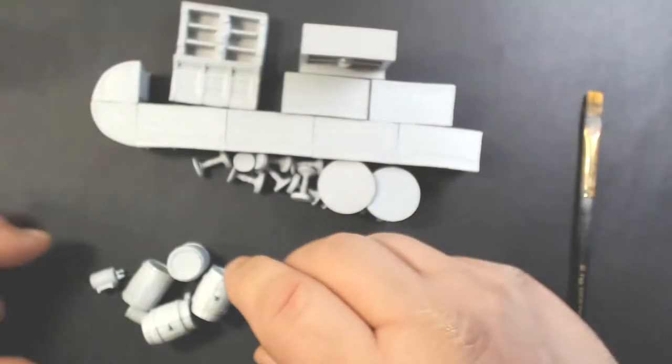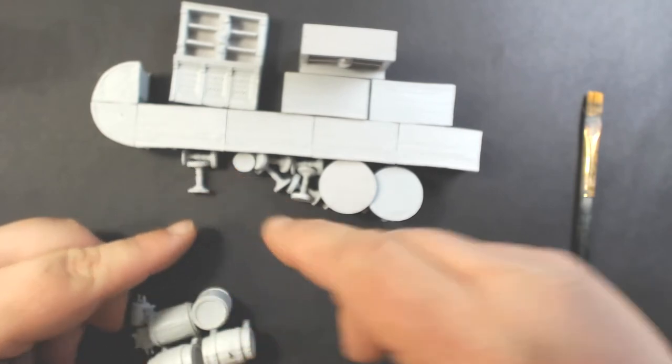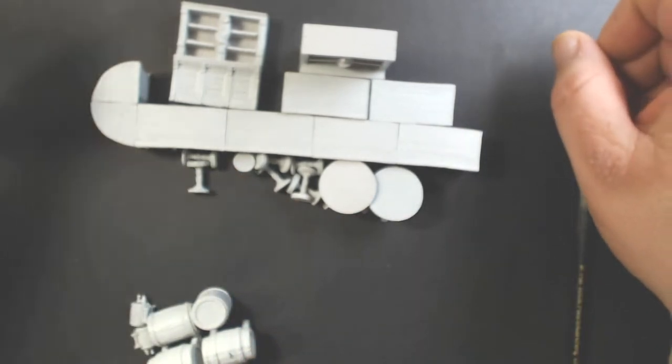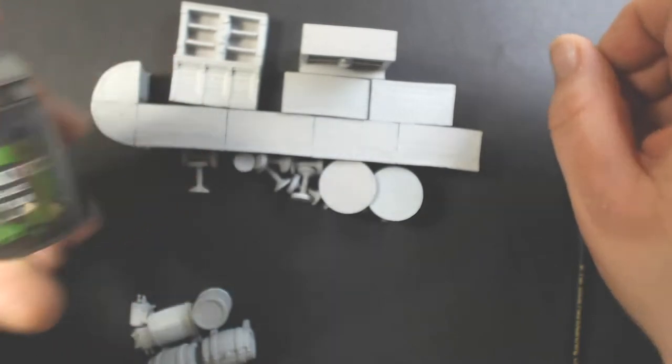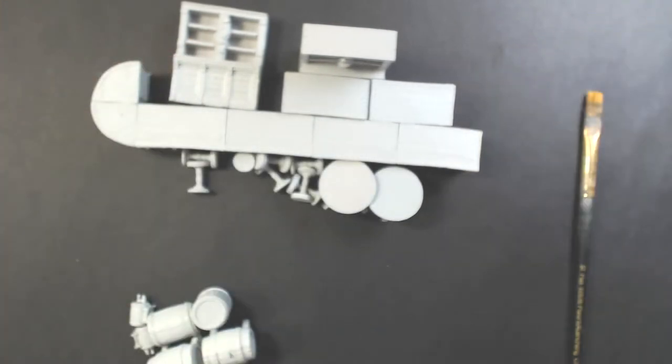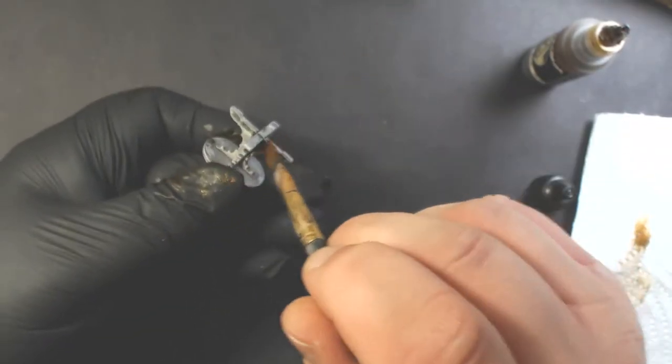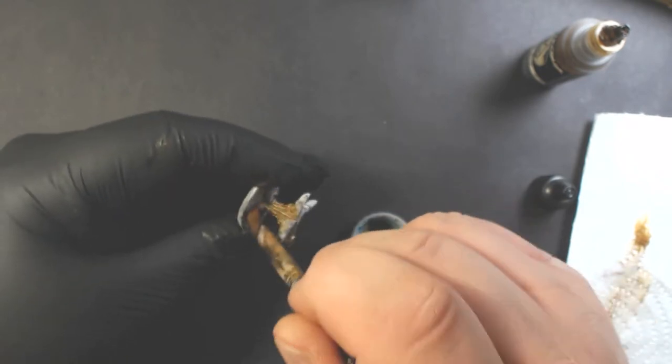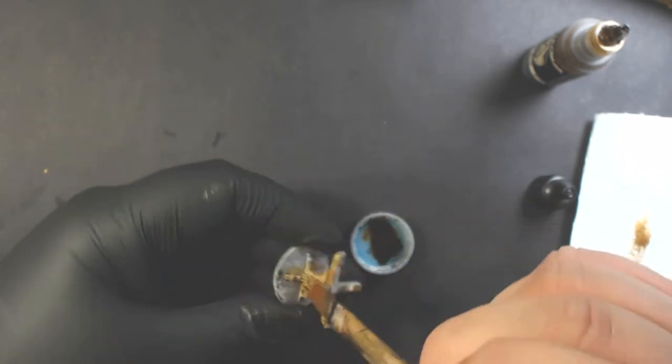Basically everything gets coated with a coat of Citadel Nuln Oil wash, and once that's dry we've got our Scale 75 Inktense Wood ink and everything gets painted with that.